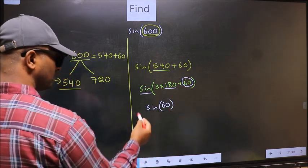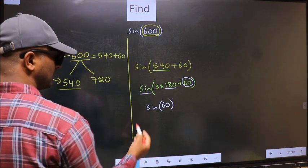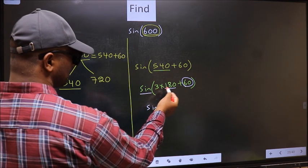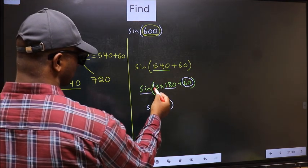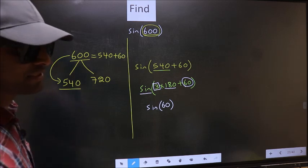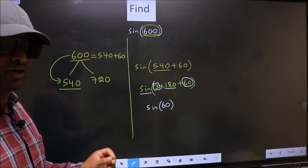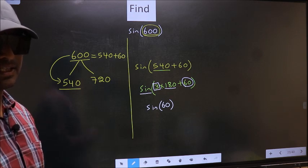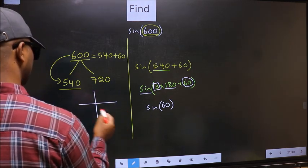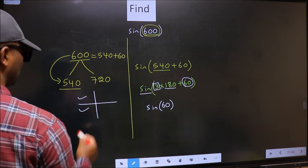Now the question is, will we get here plus or minus? To answer that, we should look at the number before 180. That is 3. And 3 is odd. And all the odd multiples of 180 lie either in the second or in the third quadrant.